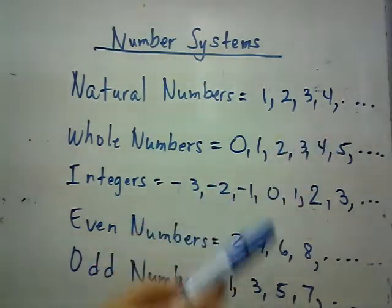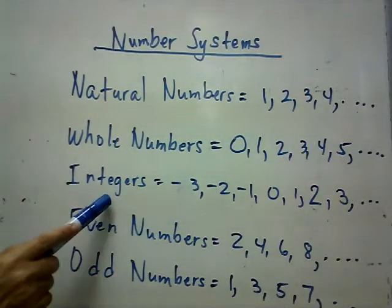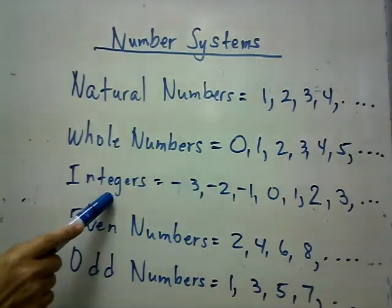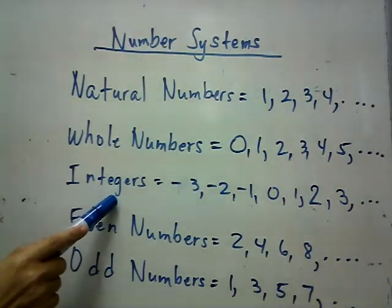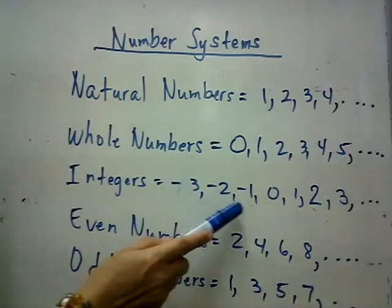Our third number system are the integers. For the integers, it includes the negative numbers, zero, as well as positive numbers, such as negative 3, negative 2, negative 1, 0, 1, 2, 3, 4, 5, 6 and so on.